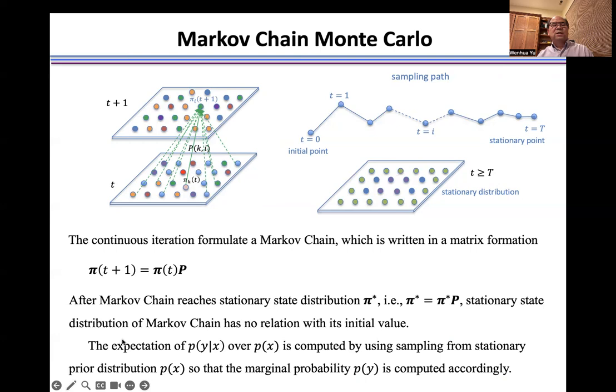So the expectation of p(y|x) over p(x) is computed by using sampling from stationary prior distribution p(x*) so that the marginal probability p(y) is computed accordingly.